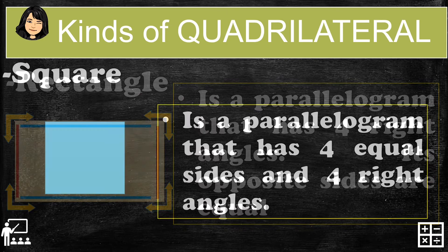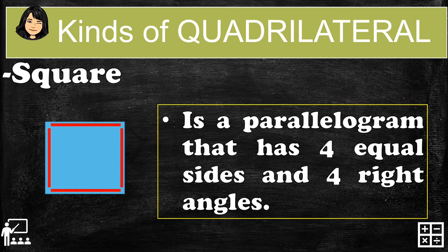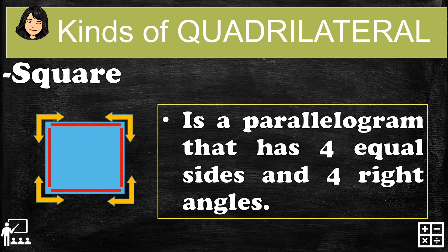Next is the square. A square is a parallelogram that has four equal sides and four right angles. The red indicators show that all sides are equal, and the four right angles are formed as shown.